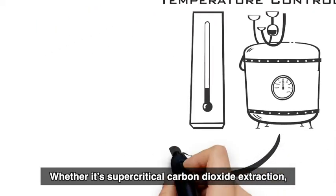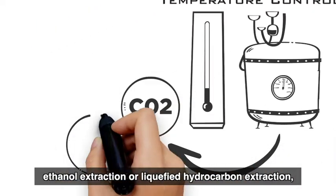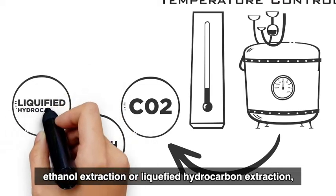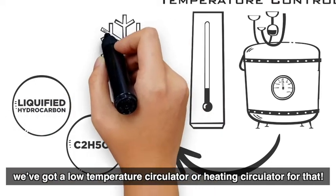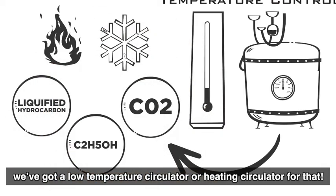Whether it's supercritical carbon dioxide extraction, ethanol extraction, or liquefied hydrocarbon extraction, we've got a low temperature circulator or heating circulator for that.